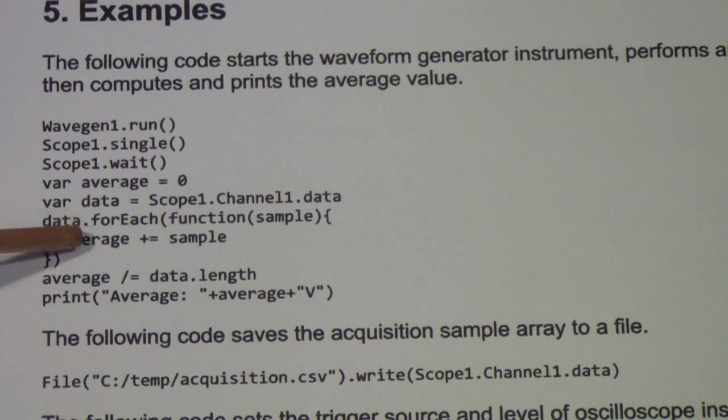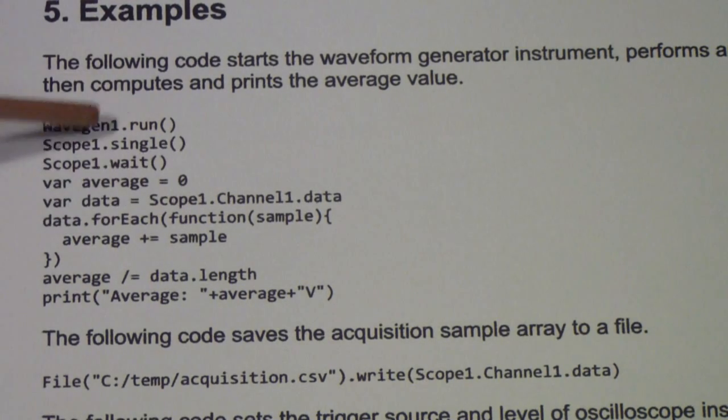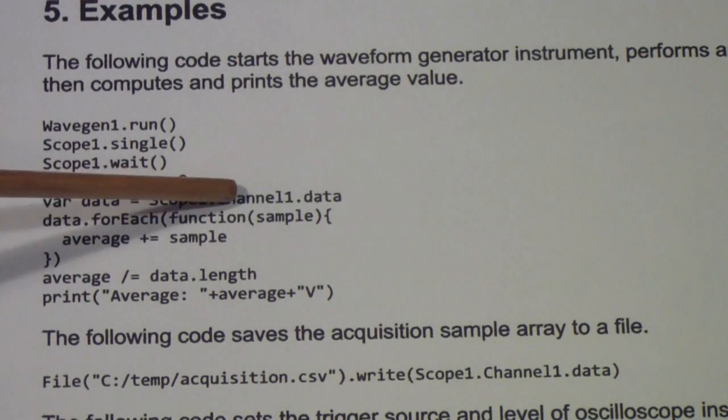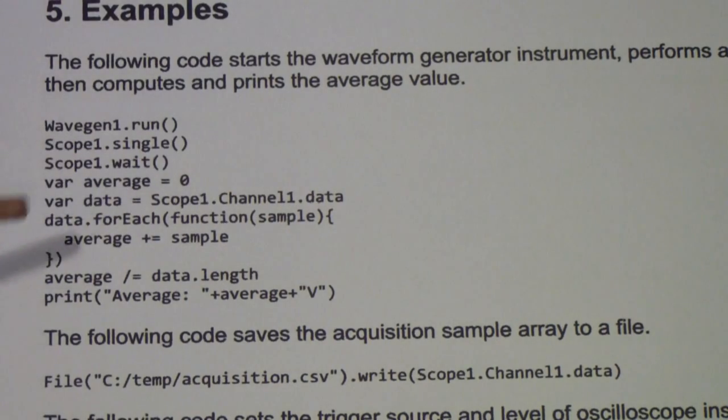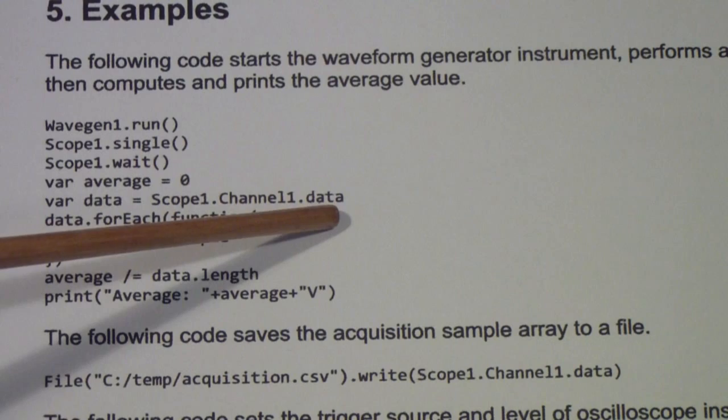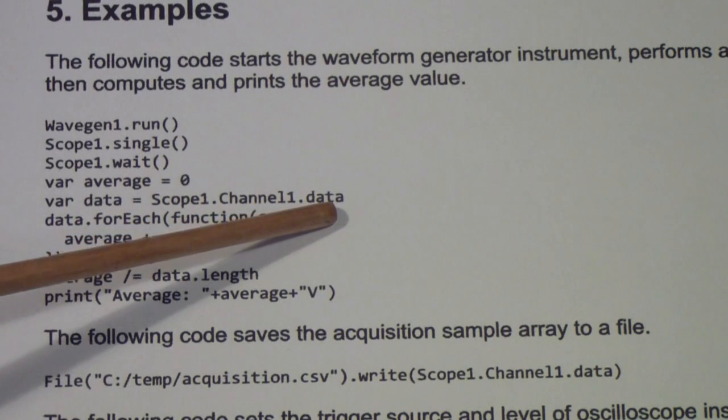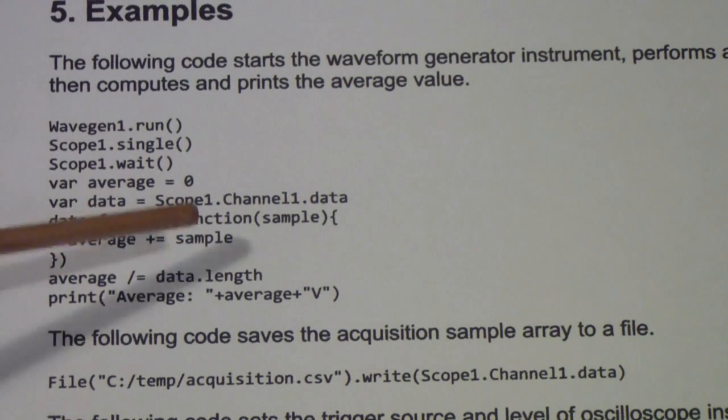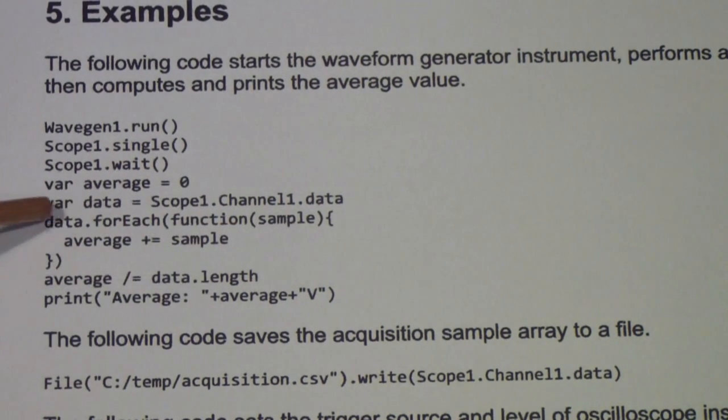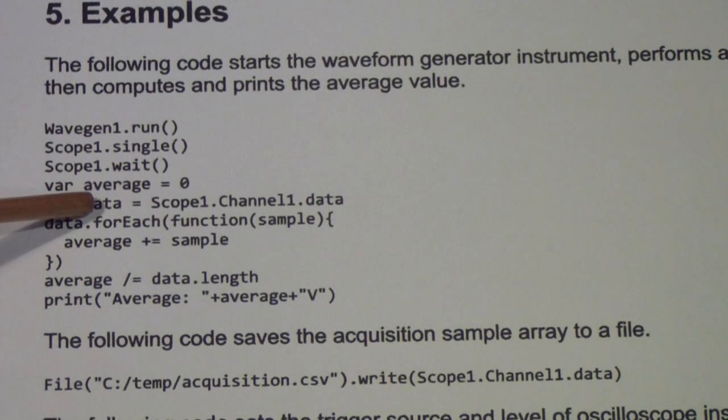You set up a variable called data, and then you do scope one channel one and data—that acquires the data from scope one channel one and puts it in a variable called data. Data then—you call forEach on that data array and do the averaging by simply adding up all the samples.